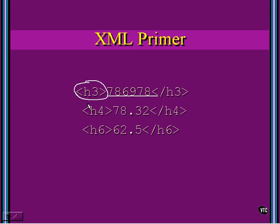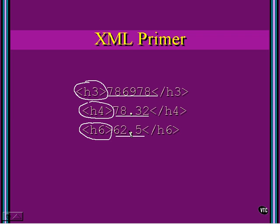Then there's going to be a little bit smaller number here and it's going to be 78.32 — don't know if that's a price, don't know if that's a weight, don't know exactly what that is. Some sort of measurement. And then there's going to be one little bit smaller heading level 6 and it's going to be 62.5. But that's all we know. We're going to have three numbers on a web page — this one will be the largest, this one will be the next largest, and this one will be the smallest. That's using HTML because it's primarily a markup language.